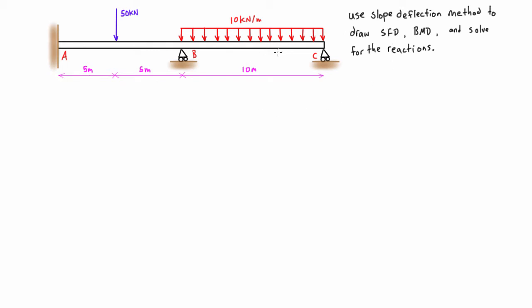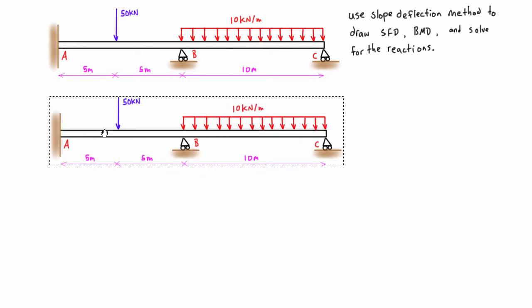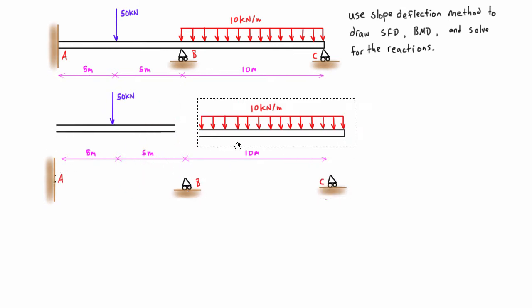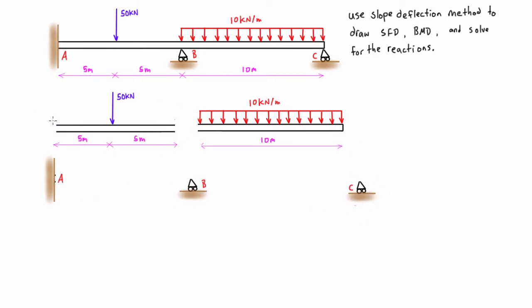Okay, so to begin the slope deflection method, the first thing that we do is we separate out each span from its reactions, and then we want to label on the internal end moments at each of those spans that we've now virtually separated. So this will become the internal moment, we call it AB, basically it's at A looking at B, or it's at A on the span AB.